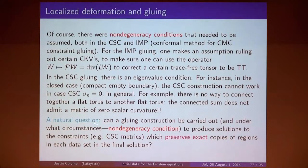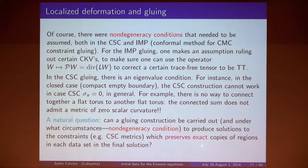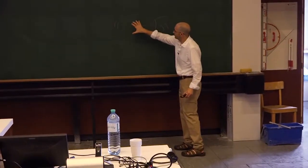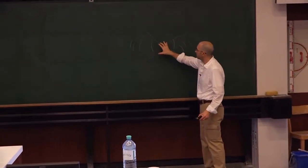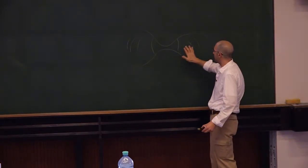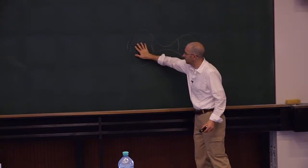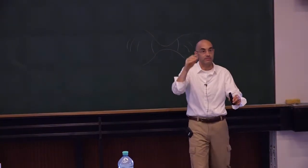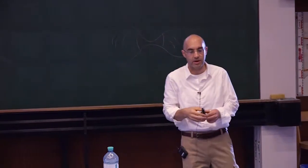A natural question to discuss today: can you come up with a gluing construction — either in the constraints or focusing on the time-symmetric scalar curvature constraint — with maybe a non-degeneracy condition, which preserves exact copies of regions in each initial data set? Could you do a gluing construction taking two solutions, glue them together in such a way that you solve the vacuum constraints and leave the data exactly the same away from the neck? That's the question.